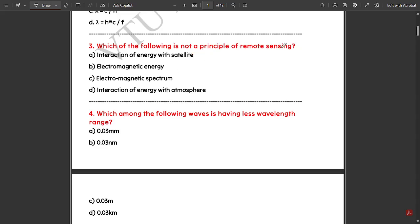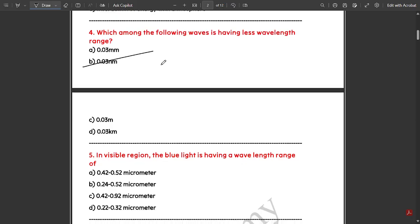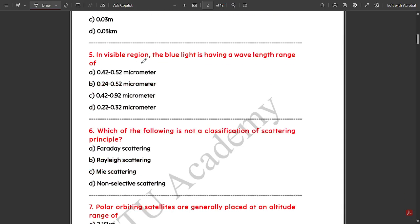Which of the following is not a principle of remote sensing? The answer is interaction of energy with satellite. Which among the following waves is having less wavelength range? The answer is 0.03 nanometer. In the visible region, the blue light has a wavelength range of 0.42 to 0.52 micrometer.